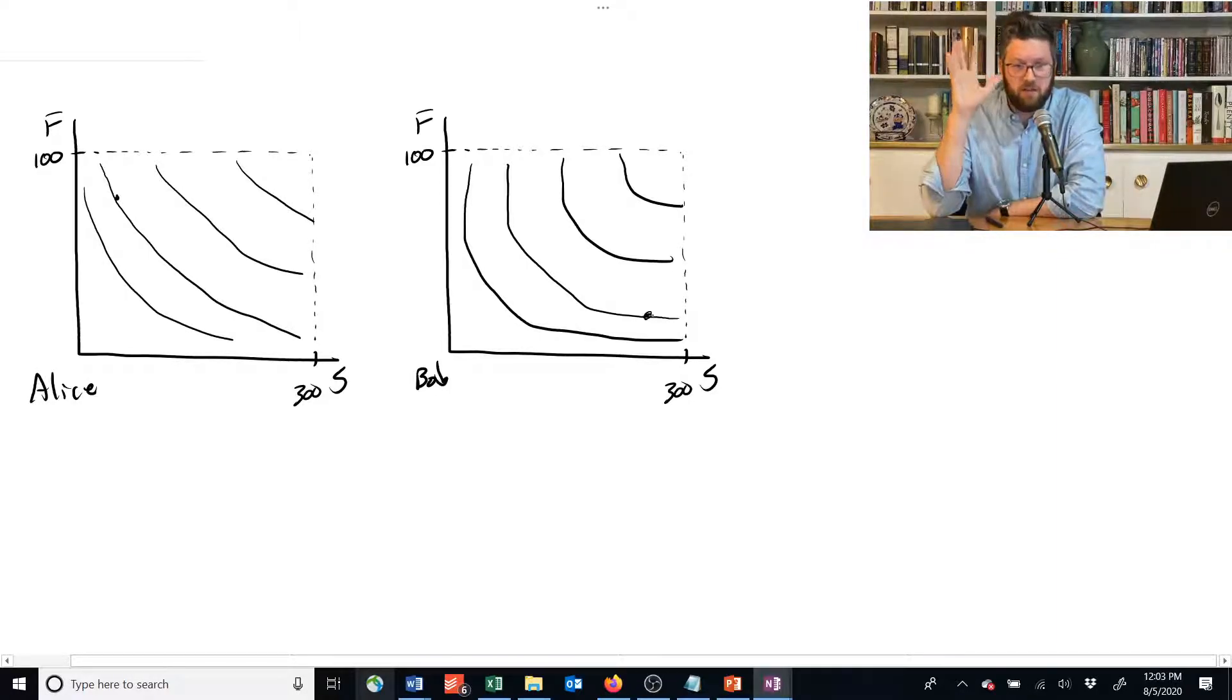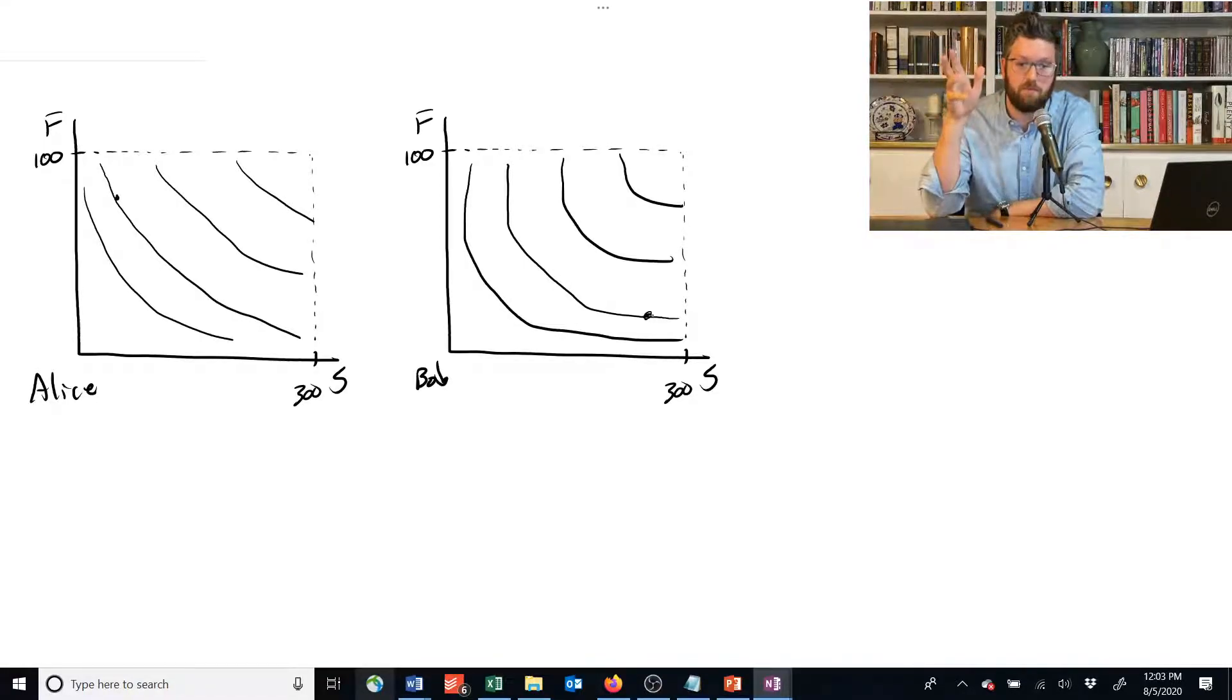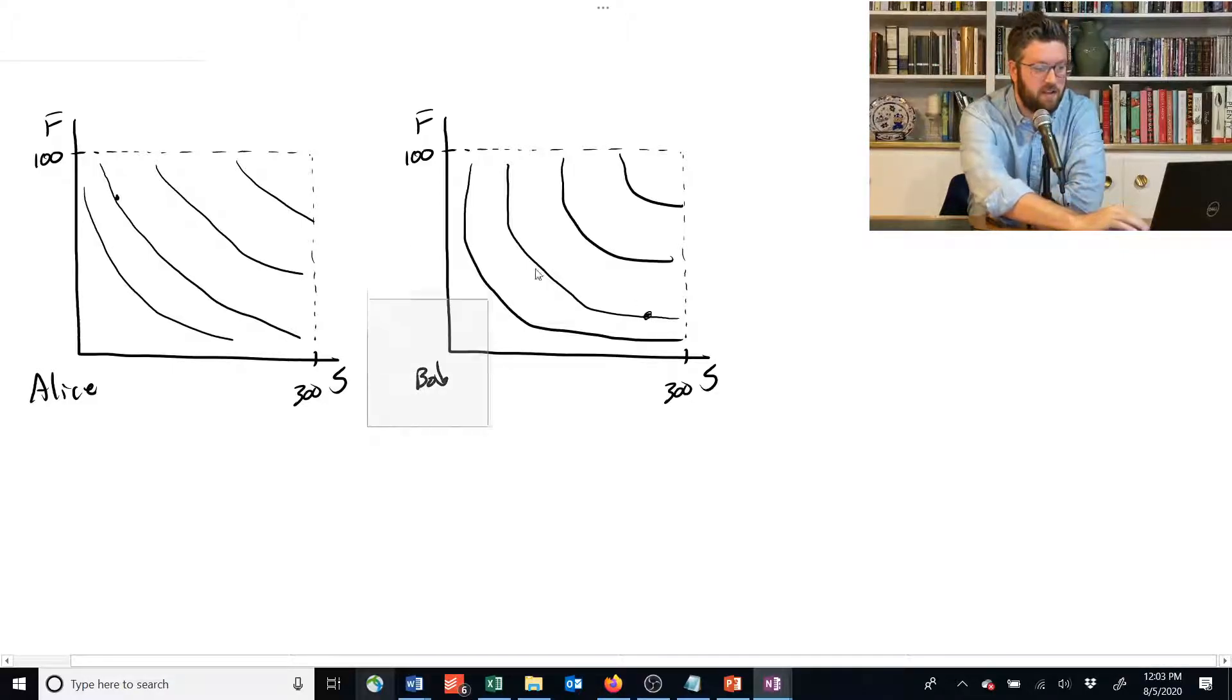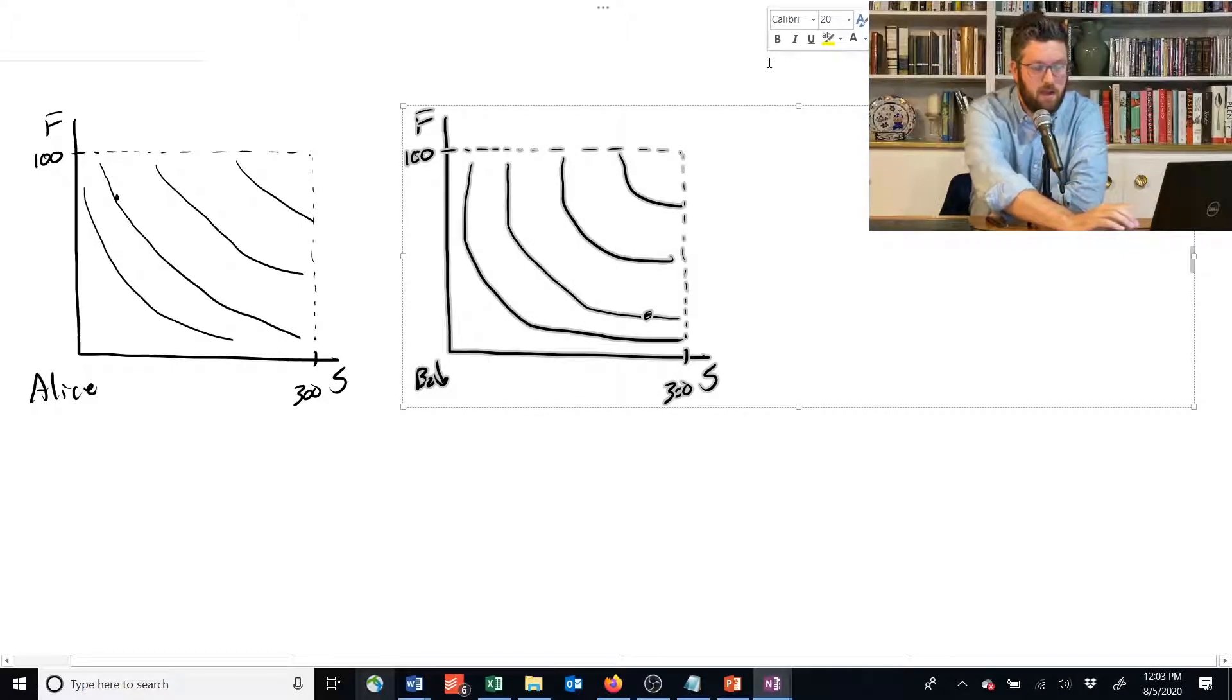What we're going to do is, once again, try to combine the information that's in these two figures into one diagram called an Edgeworth box. So we're going to take Bob's preferences and his allocation, and we're going to rotate the whole thing just like we did last time.